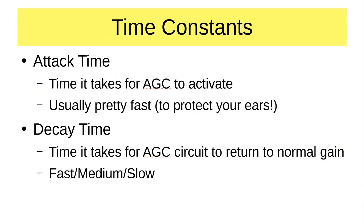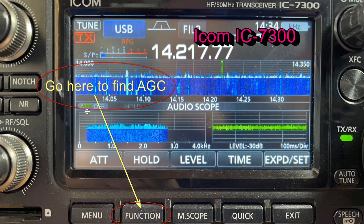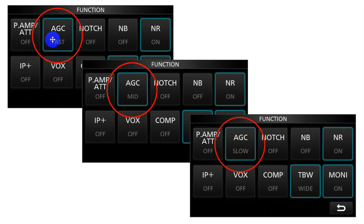There are some time constants in the AGC system. The attack time is how long it takes for the AGC to activate — it's usually pretty fast to protect your ears. The decay time is variable; it's the time it takes for the AGC circuit to return to normal again. You can select fast, medium, and slow on most receivers. If you look at the function button on the radio, clicking it cycles through AGC fast, mid, and slow.